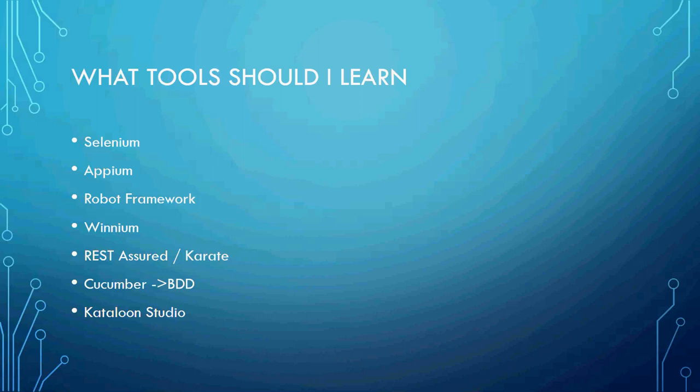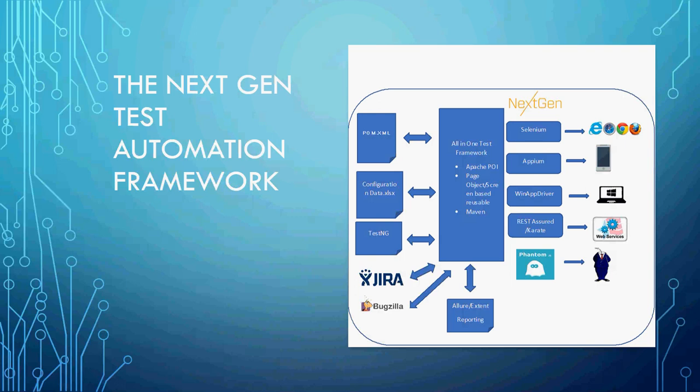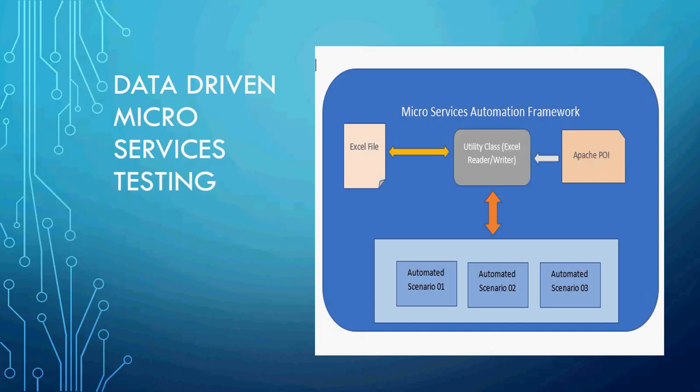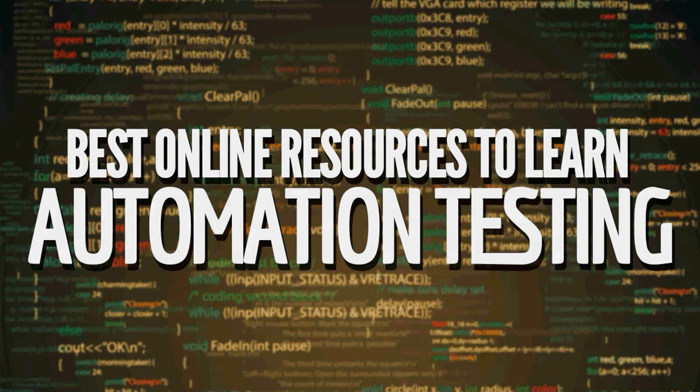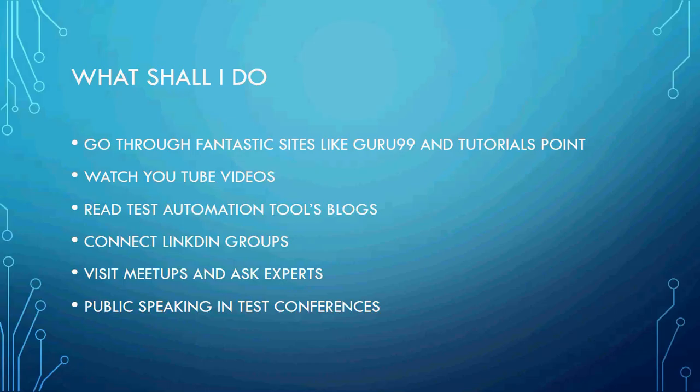There are a lot of tools to learn — Selenium, Appium, Robot Framework, Winium, Rest Assured, Cucumber, and Katalon Studio. You should learn this entire tool stack. Next-gen frameworks will integrate many tools including Jira and Axure, and you can use REST APIs provided by tool vendors for integrations. There will also be a lot of headless browsing since automation frameworks may be transferred to Linux machines without browsers. Use existing knowledge in new frameworks, go through tutorial sites, watch YouTube videos, connect on LinkedIn, attend meetups, do public speaking, and go to test conferences to expand your knowledge.